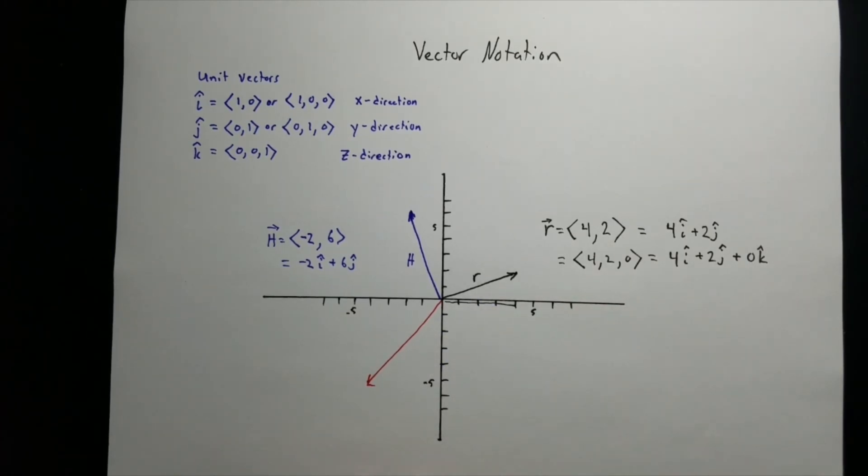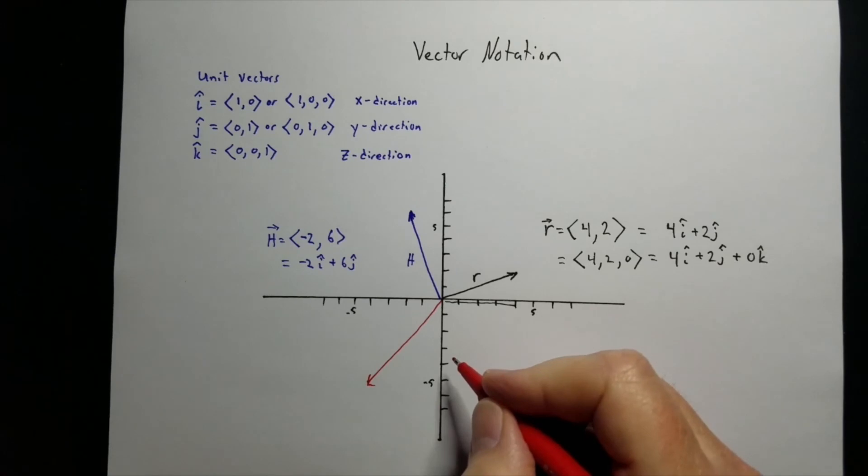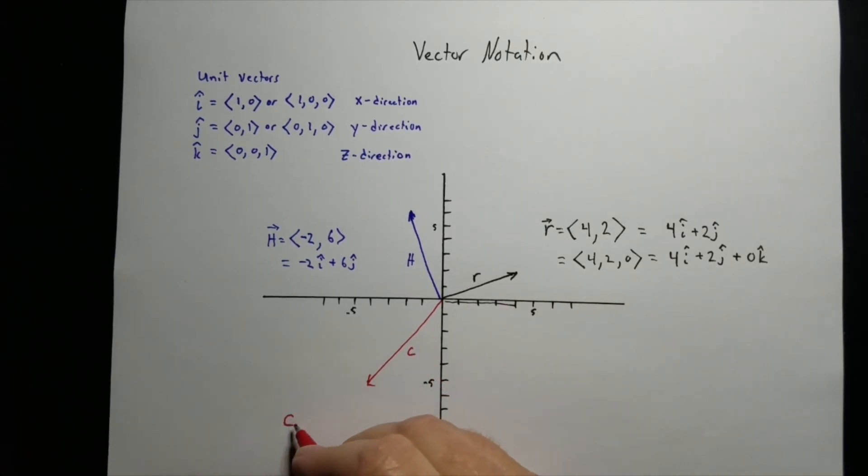So for the red, let's make it, let's call it c. Let's see. We go over, looks like we're about at 4.